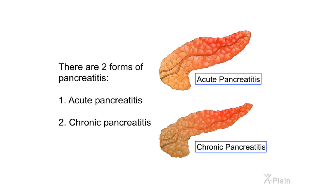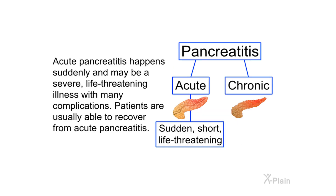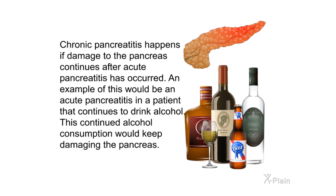There are two forms of pancreatitis: acute pancreatitis and chronic pancreatitis. Acute pancreatitis happens suddenly and may be a severe, life-threatening illness with many complications. Patients are usually able to recover from acute pancreatitis.